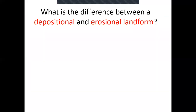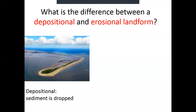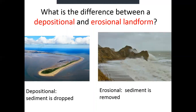So to answer the question — what is the difference between a depositional and erosional landform? For a depositional landform, sediment is dropped by constructive waves. For an erosional landform, sediment is removed by destructive waves. When you see a coastal landscape, think: was it formed by rock being broken down and taken away? If so, it's erosional. If it was formed because sediment was dropped by constructive waves, then it's a depositional landform.